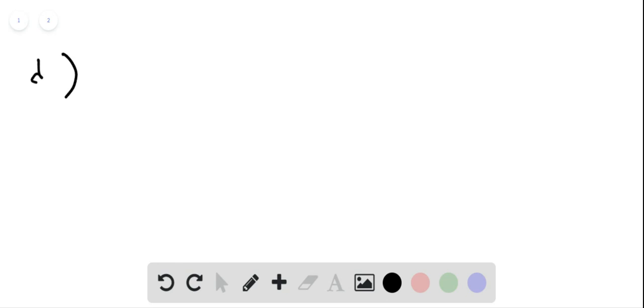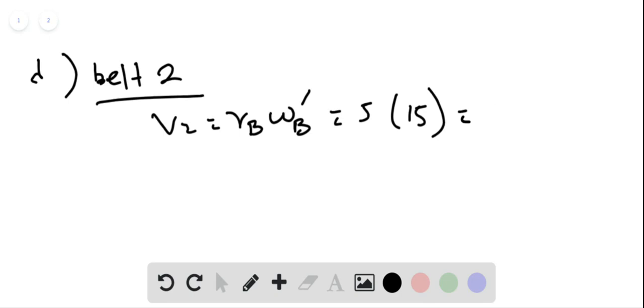Part D, the linear speed of a point on belt 2 is V2 equals RB omega B dash. That is equal to 5 times 15 radians, which is 75 cm per second.